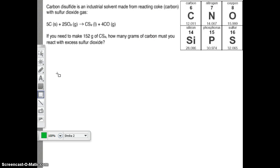Carbon disulfide is an industrial solvent made from reacting coke, which is carbon, not coke like you hear of on TV, the drug. They actually call forms of carbon coke, with sulfur dioxide gas. There's our chemical equation: 5 solid carbons plus 2 sulfur dioxides which are in gas form yield carbon disulfide and 4 carbon monoxide gas molecules. If you need to make 152 grams of CS2, how many grams of carbon must you react with excess sulfur dioxide?